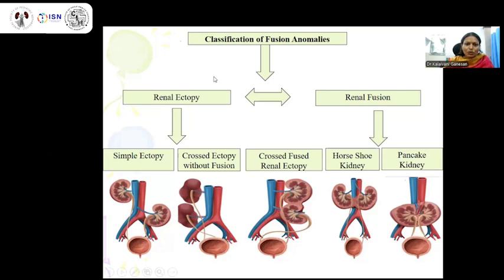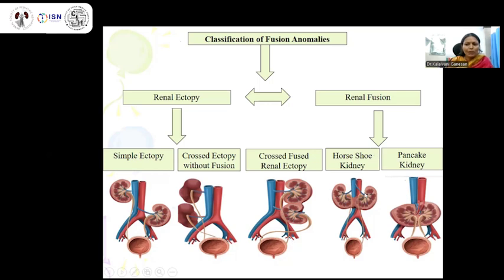The classification of fusion anomalies includes renal ectopia and renal fusion anomalies. Simple ectopia has one kidney in normal position and the other lower down. Crossed ectopia without fusion has both kidneys on the same side without fusion. Crossed fused renal ectopia has both kidneys on the same side with the upper kidney's lower pole fused with the upper pole of the low-lying kidney, and the ureters may cross. Renal fusion anomalies include horseshoe kidneys and pancake kidneys.